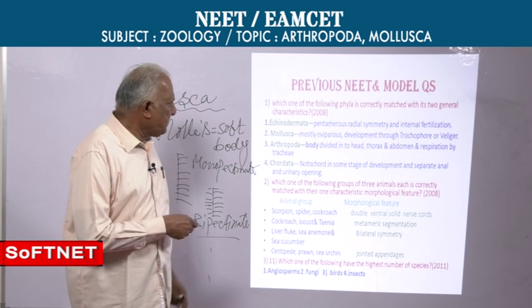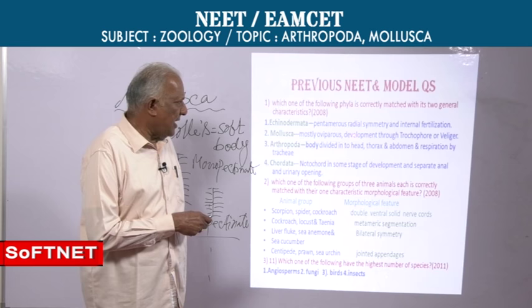Mollusca: mostly oviparous egg-laying forms — correct. Development through trochophore or veliger — also correct. Both characters match Mollusca.